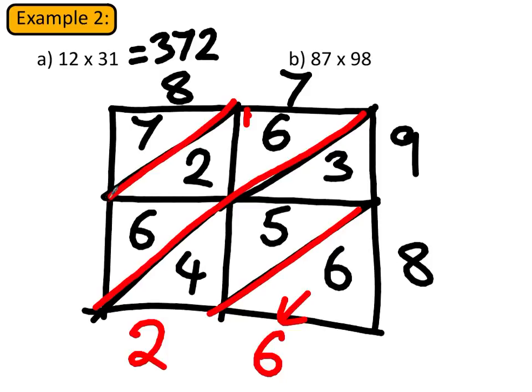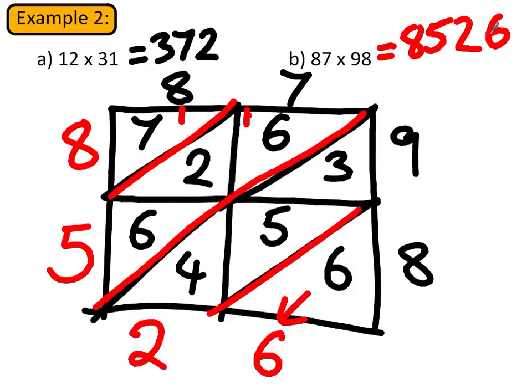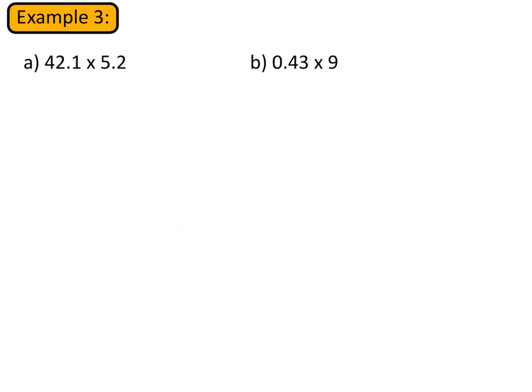And we need to remember to add that 1 in when we do the next column. So the next column is going to be 6 and 2 and 6 and that 1, which will give us 15. And again we write the units of the 15 there, and we squeeze the tens column of the 15, the 1, into the next box. So in this next box we have 7 and 1 which gives us 8. So the final answer to 87 times 98 is 8526.